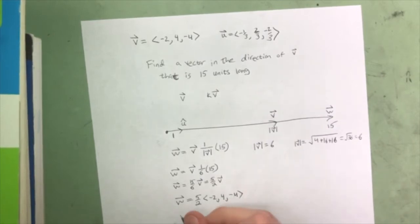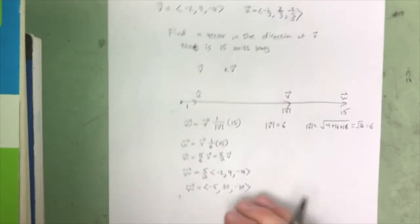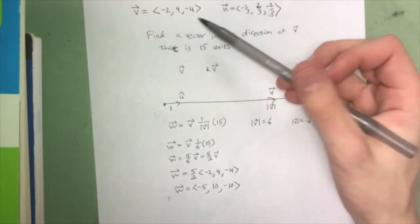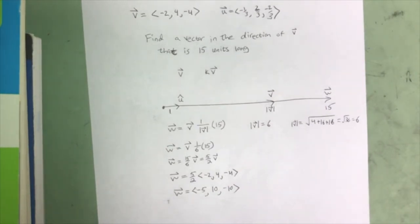So w is a vector that is in the same direction as v but is 15 units long instead of 6. And so this isn't the exact problem that you saw in the test, but it's similar and it should give you an idea of where you went wrong or what you need to do if you see it.